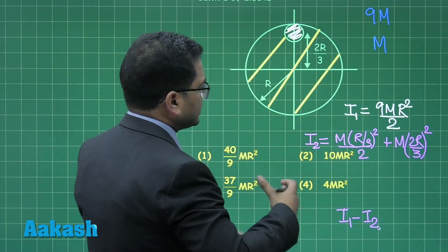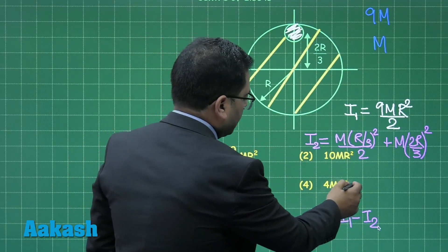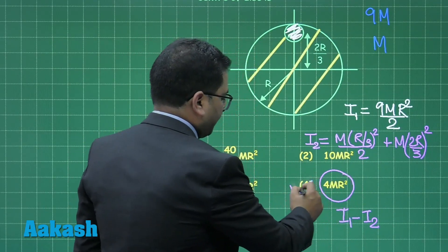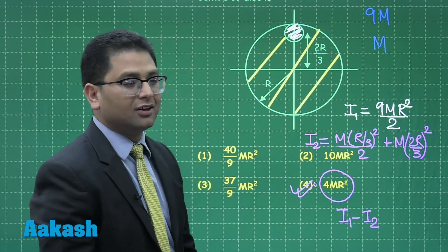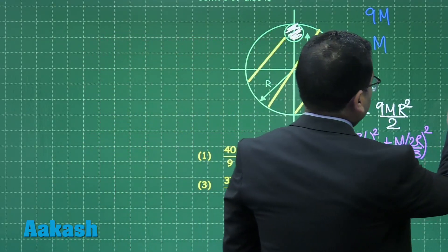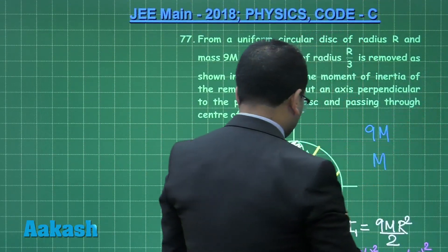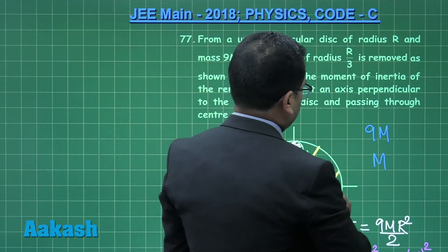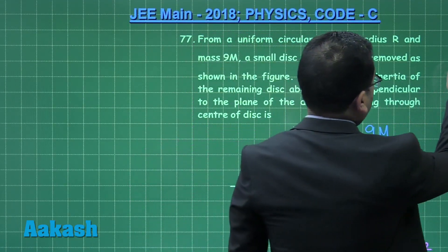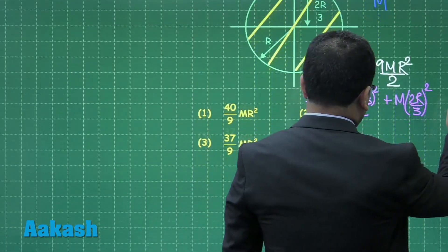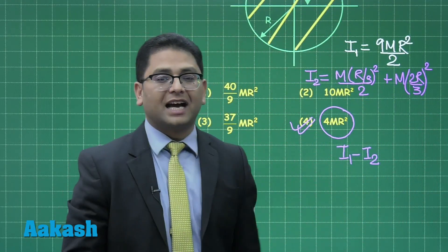With straightforward calculation, the net moment of inertia equals 4mR². Therefore, the correct option for question 77 is option 4.